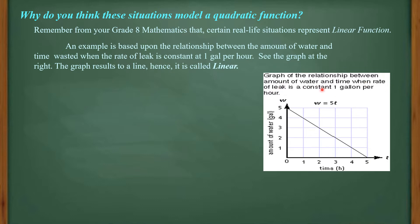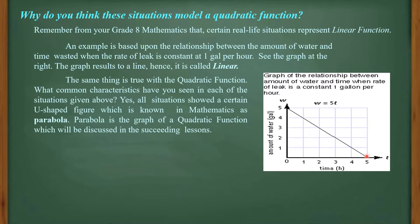The graph of the relationship between the amount of water and time at a constant leak rate of 1 gallon per hour — with amount of water on one axis and time on the other — produces a linear pattern shown by the plotted points. The same principle applies to quadratic functions. What common characteristics have you seen in each of the real-life situations? All of them showed a U-shaped figure known in mathematics as a parabola, which is the graph of a quadratic function and will be discussed in succeeding lessons.